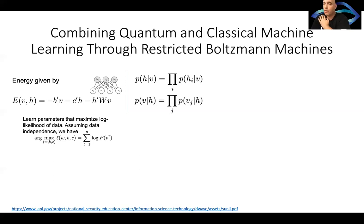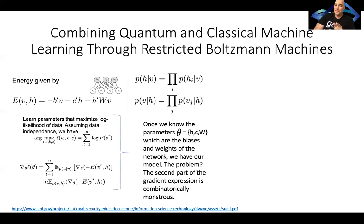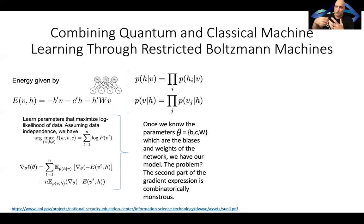In our case, we wanted to learn about these 104 lung cancer patients. We want to get the maximum of this function. When you work out the math, this gradient — theta, which is actually B, C, and W, these parameters — if you want to solve this equation, it's really a problem. To reiterate, if we can know these B, C, and W parameters, which are the biases, weights, and network, we have our model. The problem is the second part of this gradient equation depends on a massive combinatorial explosion of combinations of Vs and Hs. What statistical physicists would say is that it involves the computation of the partition function, which is very hard.